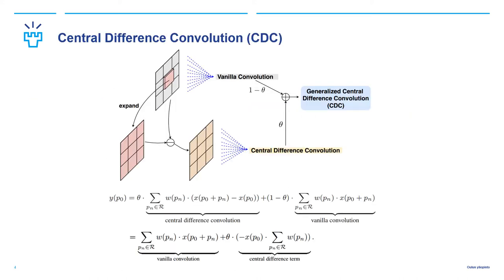This is a brief introduction of the CDC, which captures both intensity and gradient level information in a uniform convolutional fashion.